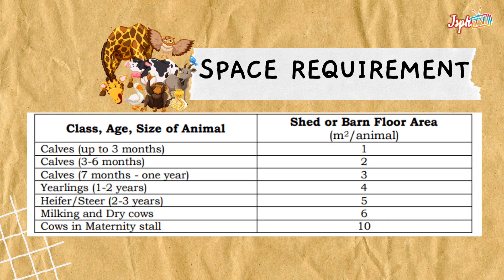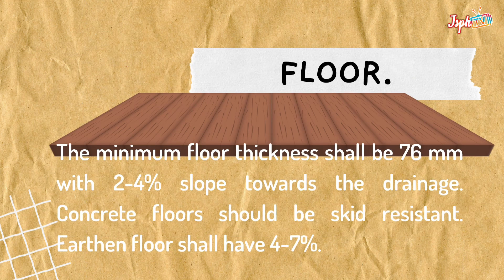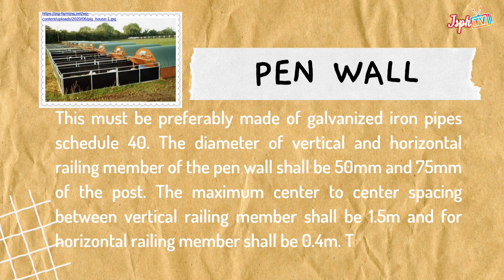This is the space requirements by class, age, size of animal, and shed or barn floor area. For the floor, the minimum floor thickness shall be 76 mm with a two to four percent slope towards the drainage. For pen walls, these must preferably be made of galvanized iron pipe schedule 40; the diameter of vertical and horizontal railing members of the pen wall shall be 50 mm and 75 mm respectively.